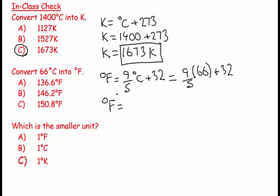Getting my calculator out, it's going to be 66 times nine, divided by five, and then plus 32. That's going to equal 150.8, so this would be 150.8 degrees Fahrenheit.